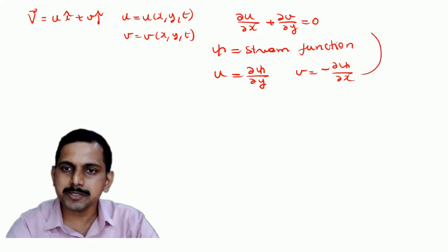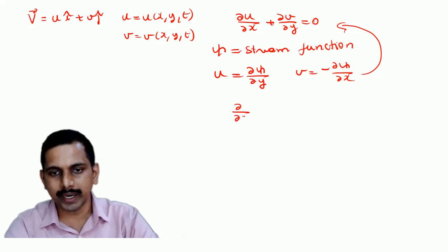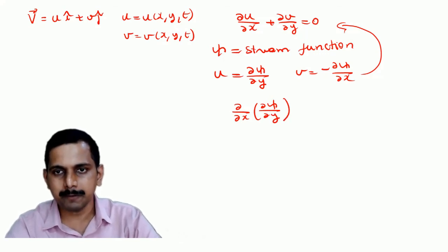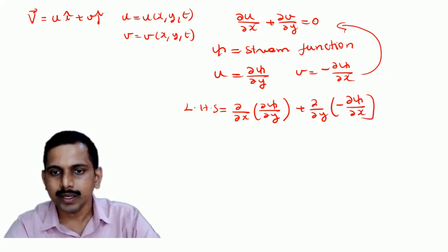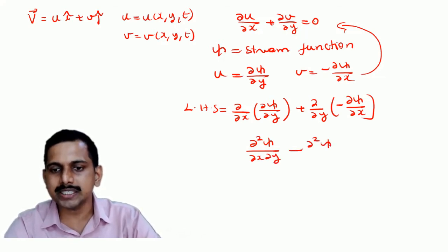Now if I substitute these values in the continuity equation, what will I get? I will get ∂/∂x of ∂ψ/∂y, I am doing it on the left hand side of the continuity equation alone, plus ∂/∂y of minus ∂ψ/∂x. Now if you see this, this can be represented as ∂²ψ/∂x∂y and minus ∂²ψ/∂y∂x.